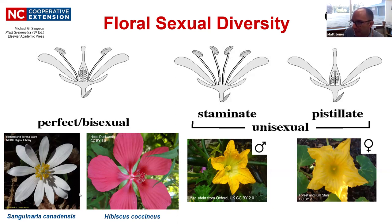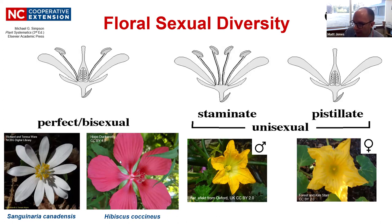Here are two native species that are bisexual. This is Sanguinaria canadensis — in the poppy family — you can see roughly 10 to 12 petals and many stamens at the center, plus a pistil. This is Hibiscus coccineus, the scarlet rose mallow — one of my favorites. You can see the sepals in the background, five large petals, and at the center both male and female parts. In this case the stamens are wrapped around the style, and above that is a five-lobed stigma for this long style and pistil.